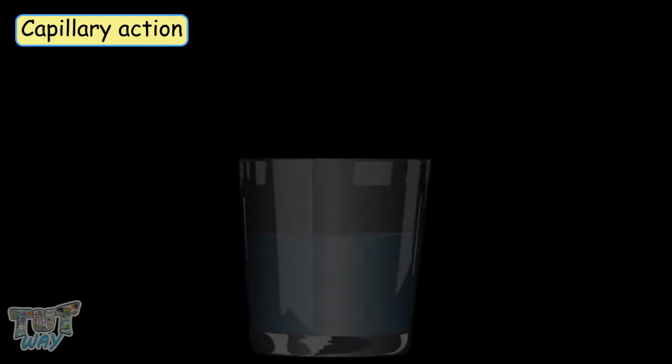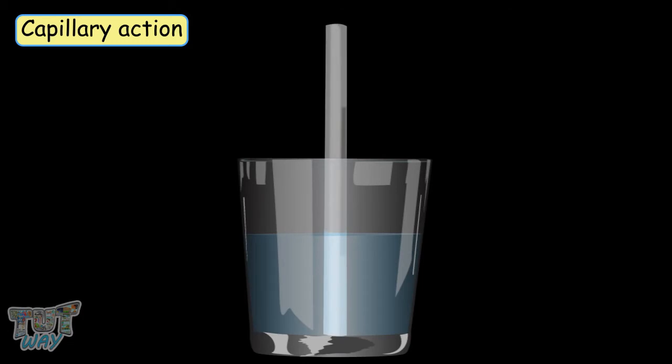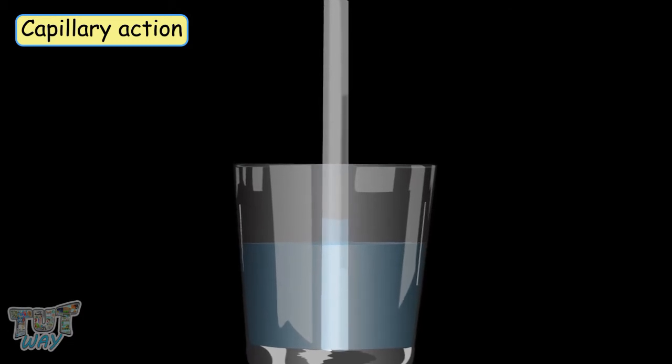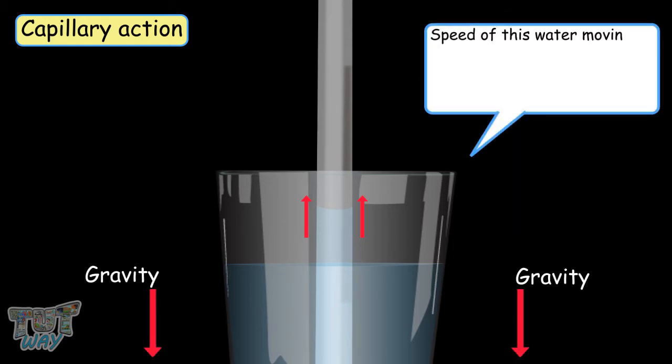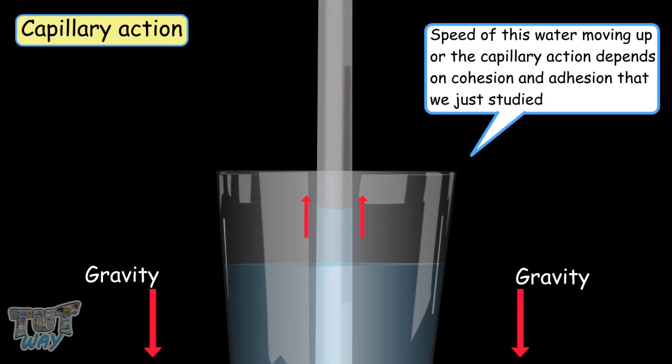Take a glass of water and put a straw in it. You will notice that the level of water is higher in the straw than that of the glass. So the water is moving upwards against gravity. The speed of this water moving up or the capillary action depends on cohesion and adhesion that we just studied.